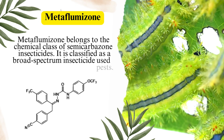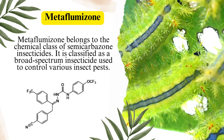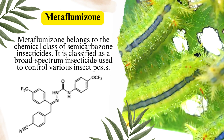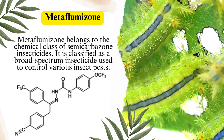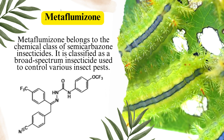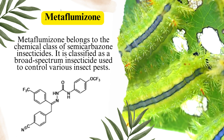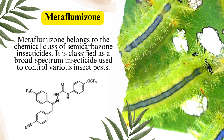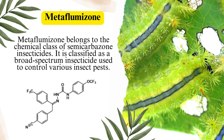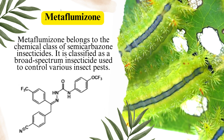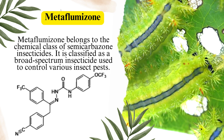Metaflumazone — chemical class and types. Metaflumazone belongs to the chemical class of semi-carbazone insecticides. It is classified as a broad-spectrum insecticide used to control various insect pests.